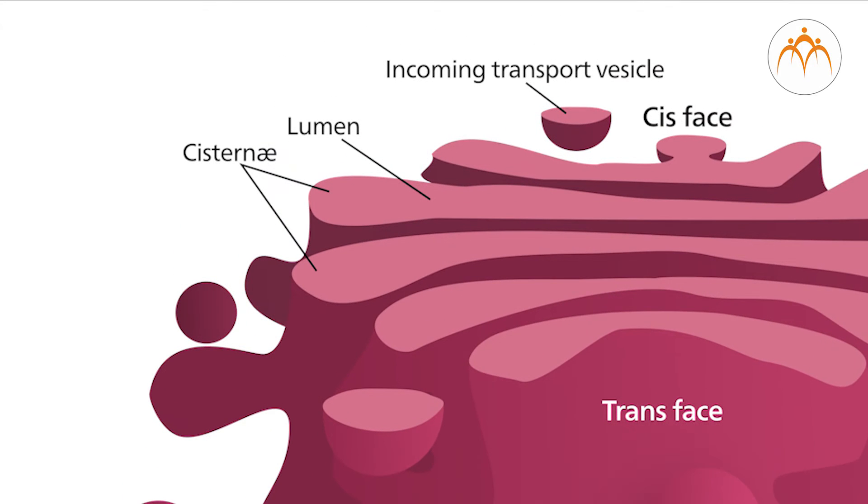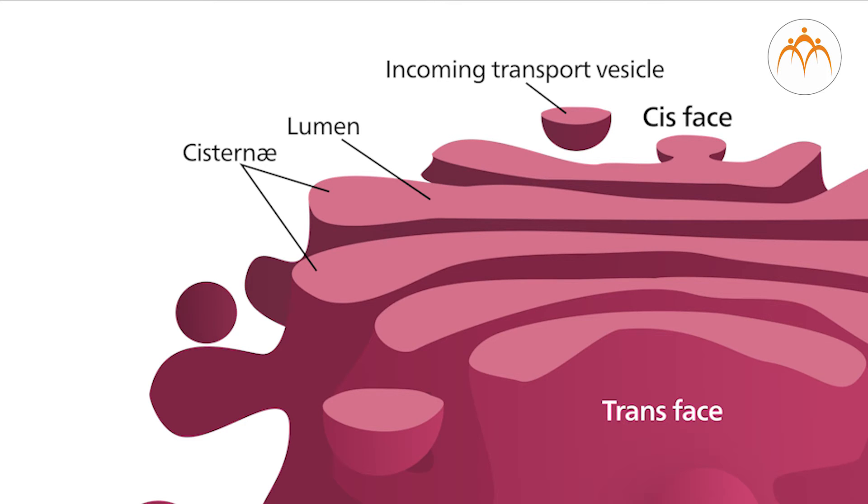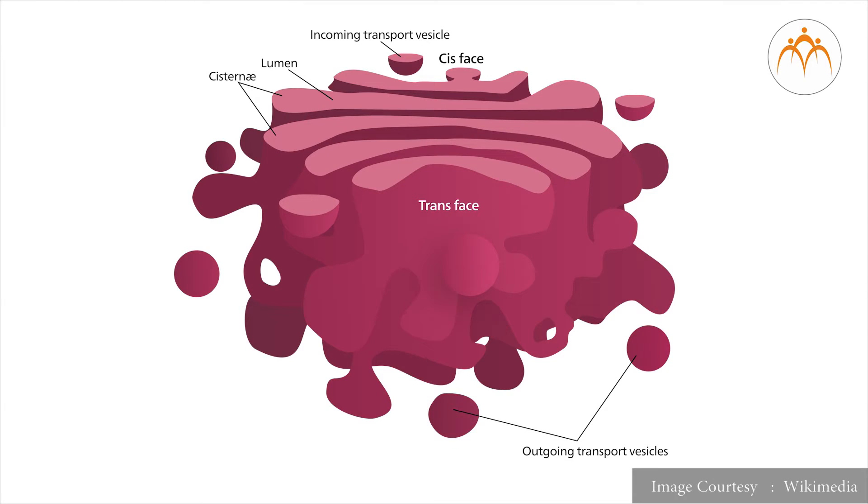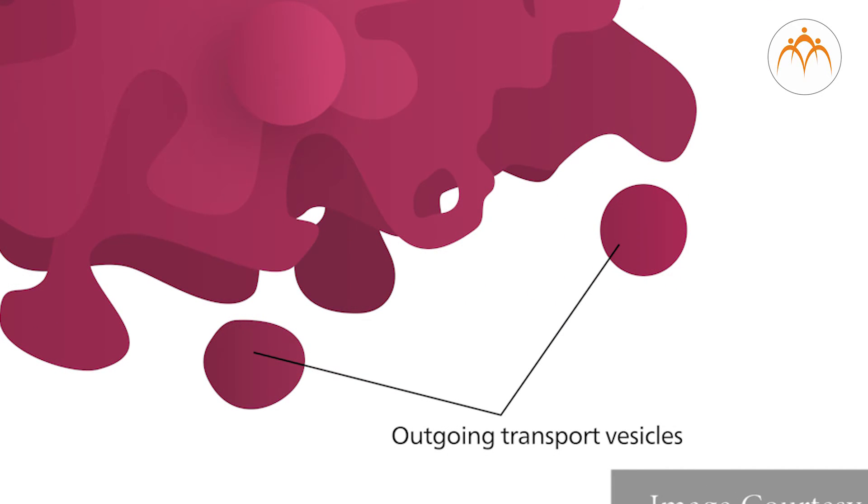The Golgi apparatus is composed of flattened sac-like cisternae stacked on each other. It has membranes like the smooth ER which lack bound ribosomes. There are usually around four to eight cisternae or sacs in a stack, although there may be many more. A complex network of tubules and vesicles is located at the edges of the cisternae.